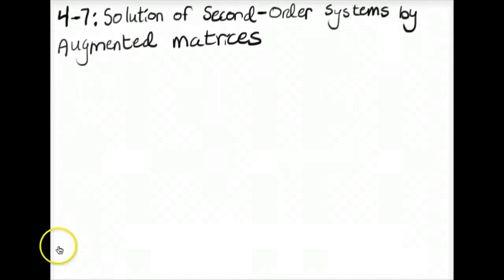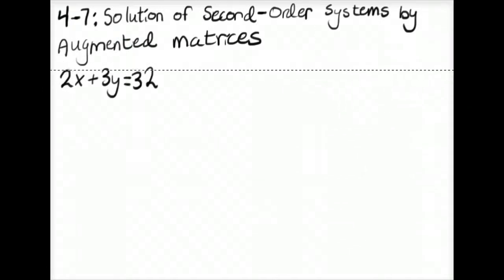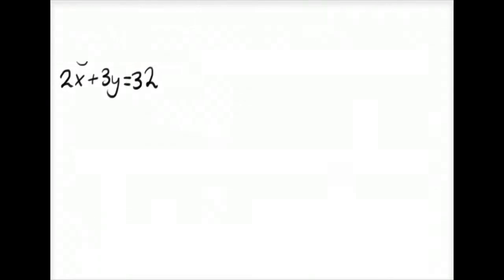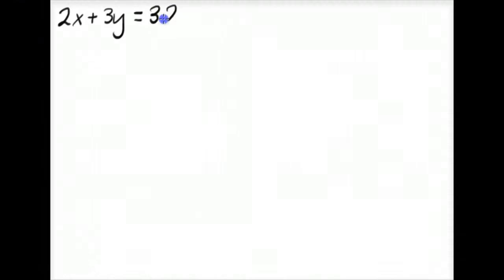So for example, we have the system 2x plus 3y equals 32, and 5x plus 4y equals 59.